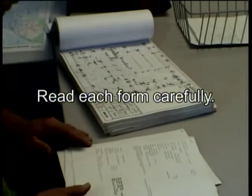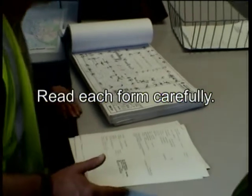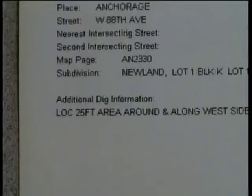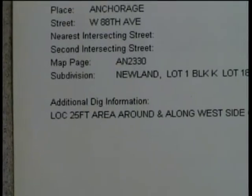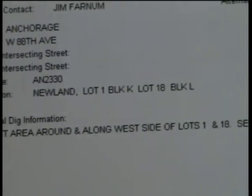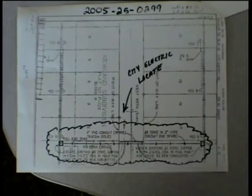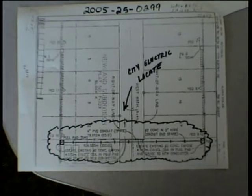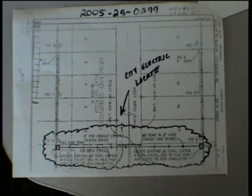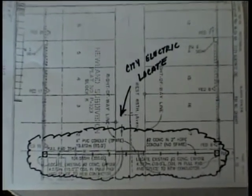Read each locate form, especially the portion entitled 'additional dig information.' Sometimes the information gathered here can help in determining whether or not a storm drain needs to be marked. Also view any maps that may be attached — these help in locating the exact spot where the contractor wants to dig.